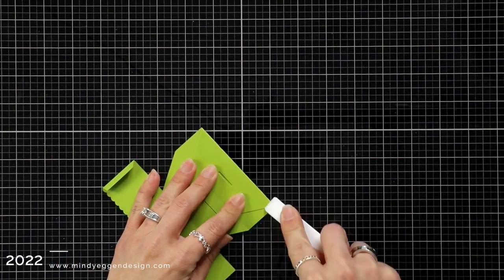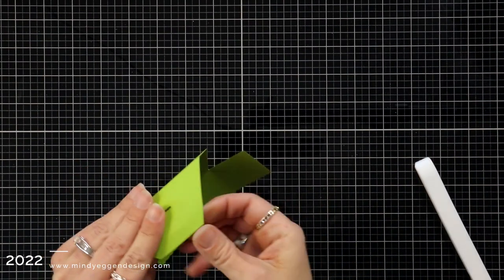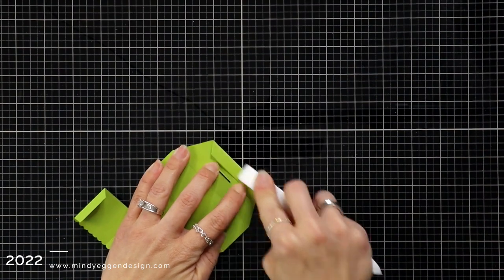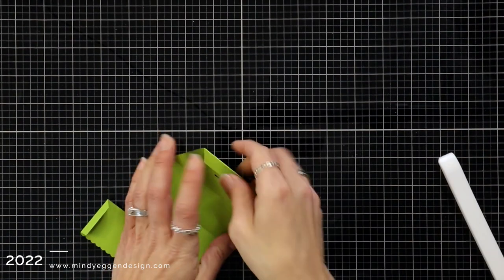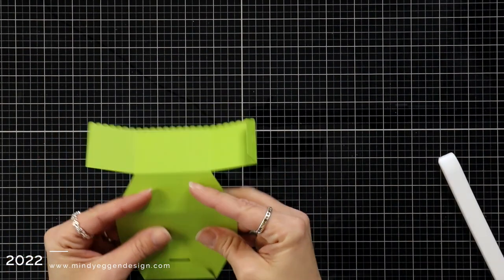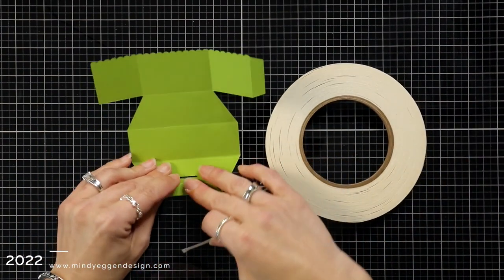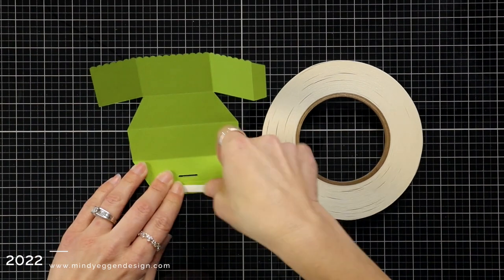One thing I do want to mention is that you can also create this out of pattern paper. The only thing I would keep in mind with pattern paper is that it is kind of hard to see the score lines. With the cardstock you can see the score lines really well, but sometimes it's a little hard to fold, and I'll talk about a trick that I like to do with that.